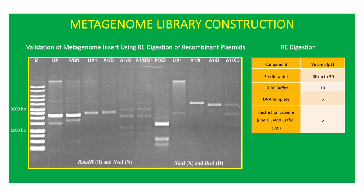Then 1 microliter of 1 KB DNA ready-to-use ladder, undigested, and digested fragments were electrophoresed in 0.7% agarose gel at 100 volts for 40 minutes. After electrophoresis, the gel was stained with ethidium bromide for 5 minutes, followed by destaining with ultra-pure water for 10 minutes with shaking. The gel was viewed using a UV transilluminator. RE digestion confirmed the insertion of a metagenome fragment in the plasmid extracted from the A1 culture.